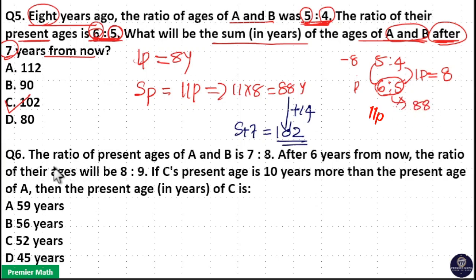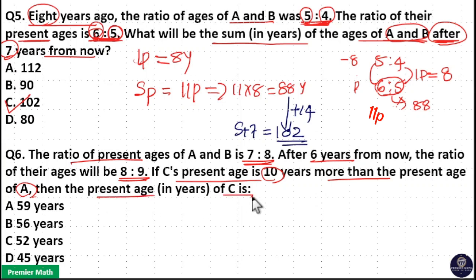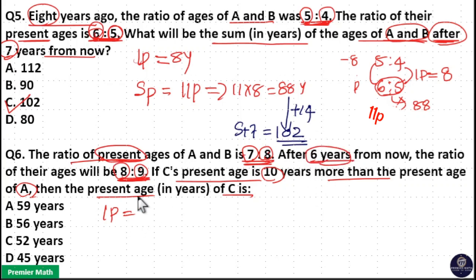Next question: the ratio of present ages of A and B is 7 is to 8. After 6 years from now, the ratio of their ages will be 8 is to 9. If C's present age is 10 years more than the present age of A, then what is the present age of C? Here, present age ratio is 7 is to 8 and after 6 years ratio is 8 is to 9. You can see 7 increased to 8 and 8 increased to 9 — that is one part increment. The part difference is the same, so one part is equal to the difference in years, which is 6 years.